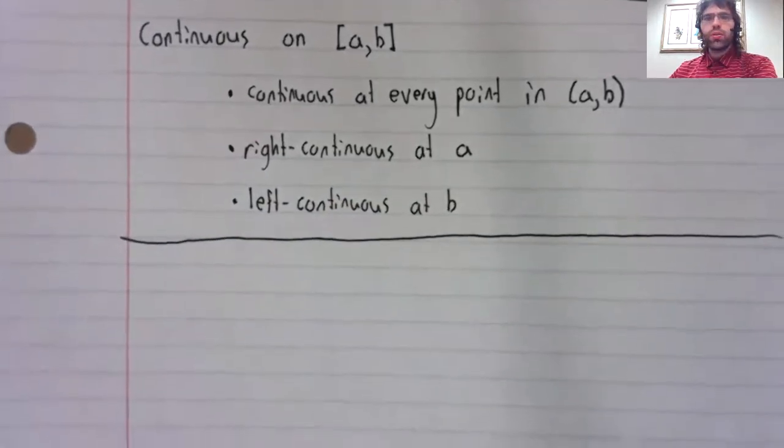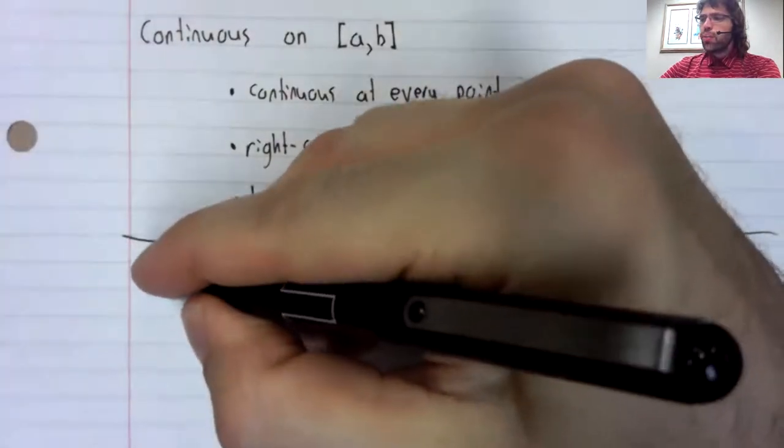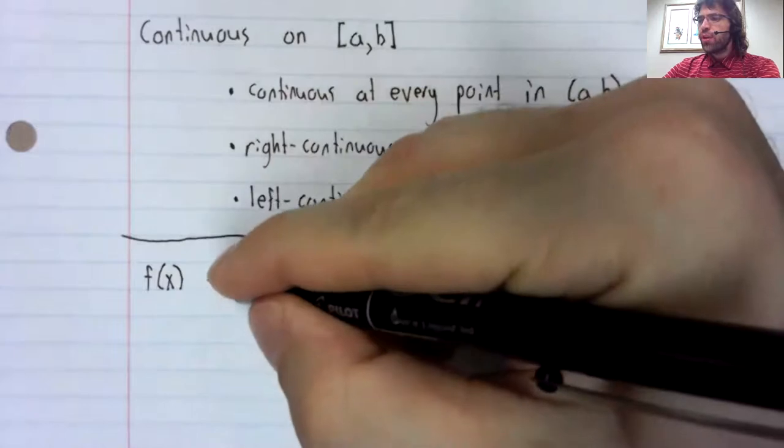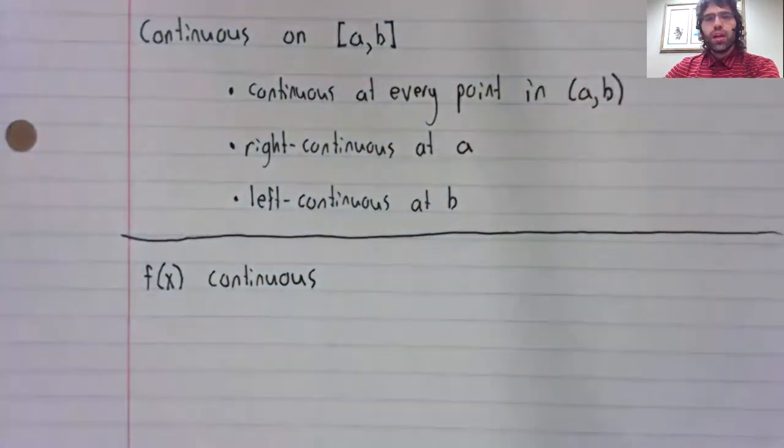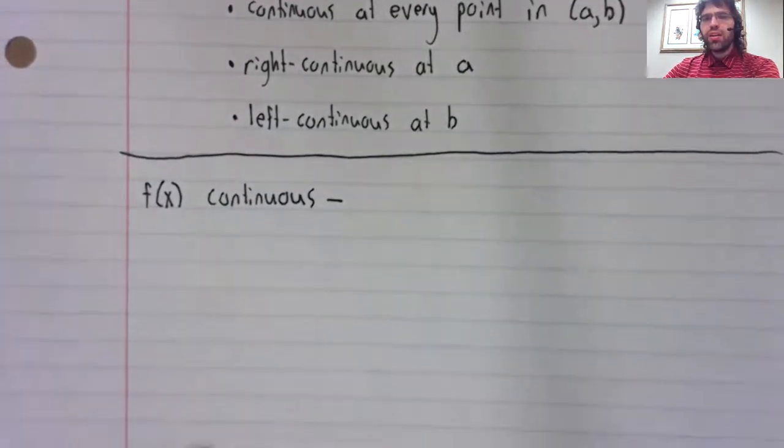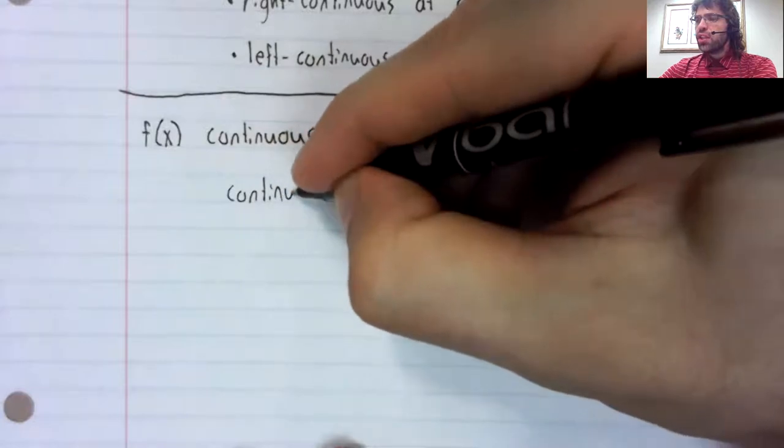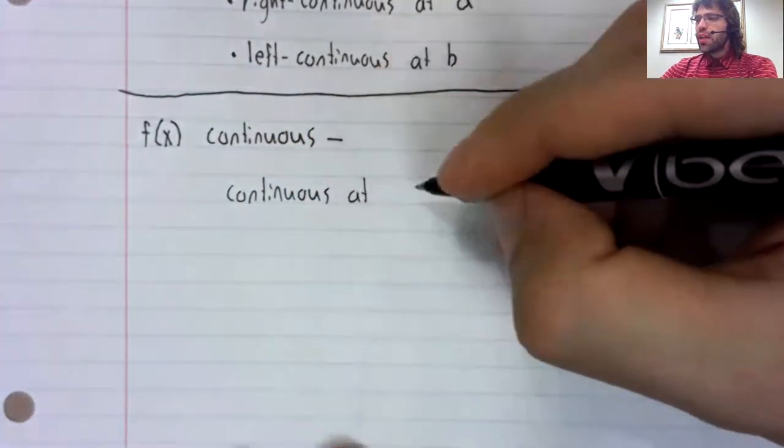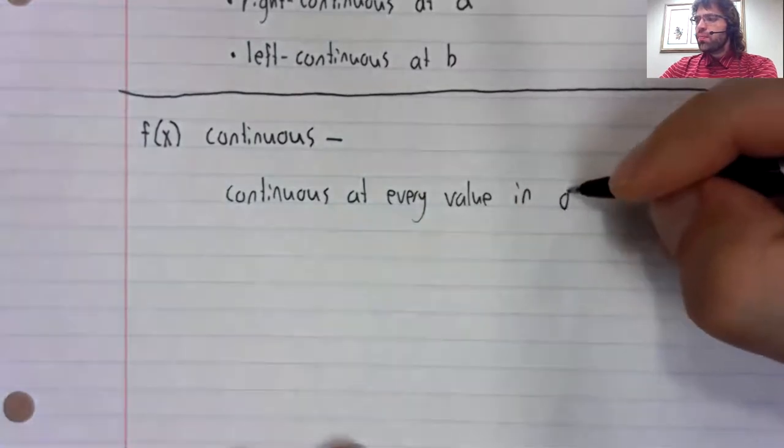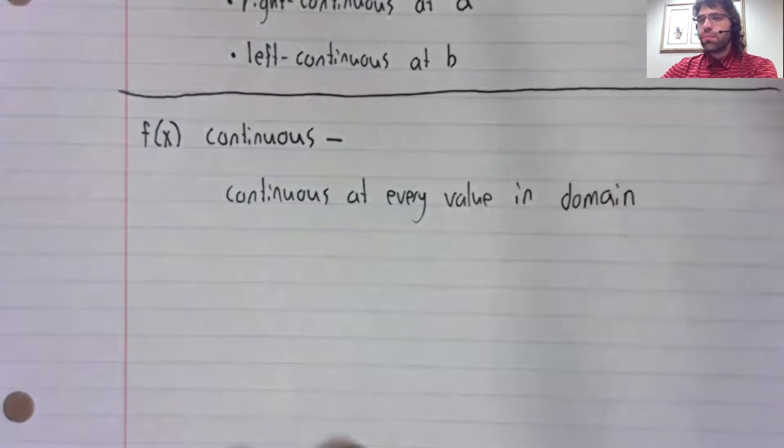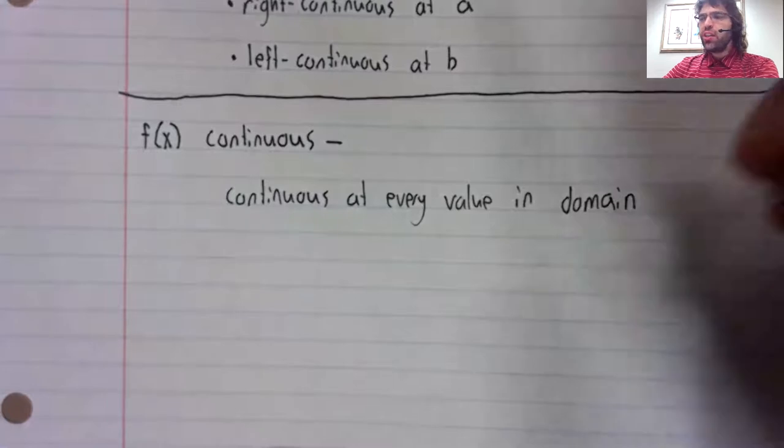One more definition in this video. We frequently talk about functions being continuous. And what we mean when we say that a function is continuous is that it's continuous at every value in its domain. And you have to be careful with this definition, because it can be kind of unintuitive.